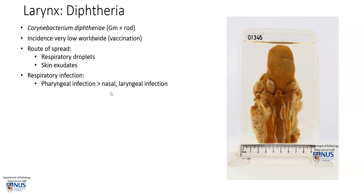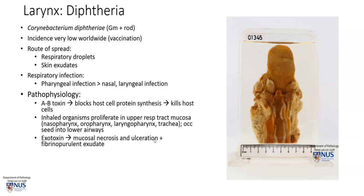However, it can also less commonly affect the nasal region or nasopharynx, as well as the larynx, as we saw in this case. What happens is that the bacteria releases this AB toxin, which blocks host cell protein synthesis — a very vital function — and therefore this kills the host cells. When the route is through inhalation, the organisms usually proliferate in the upper respiratory tract mucosa, and occasionally they can also seed into the lower airways.